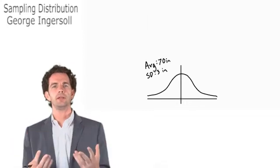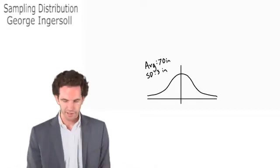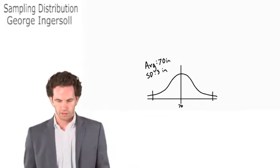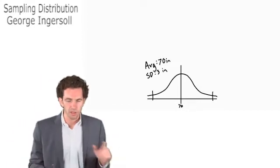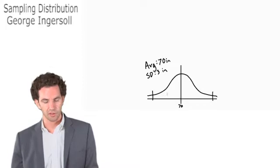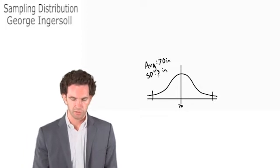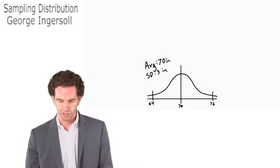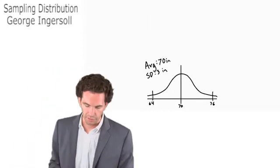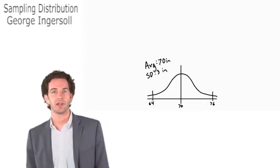If we took one man from the entire US population and measured his height, we would expect to get a distribution centered around 70 inches. We'd have a 95% chance of being within two standard deviations of the mean — so a 95% chance we'd be between 64 inches and 76 inches. There's a halfway decent chance we'd be somewhere out there, like at 64 or 76 — about a two-and-a-half percent chance in either direction.